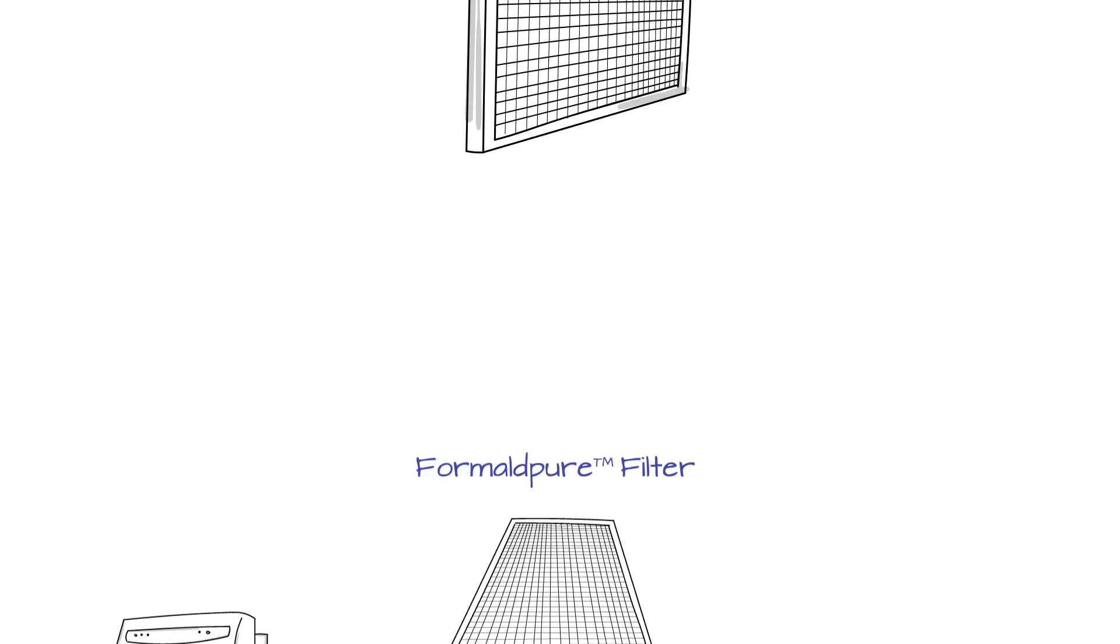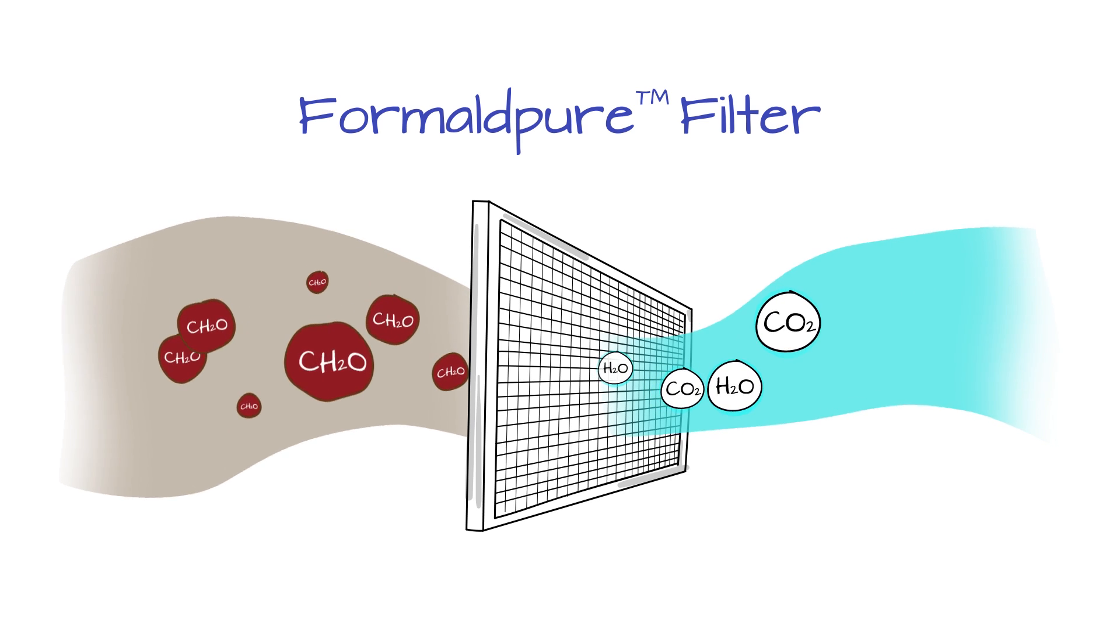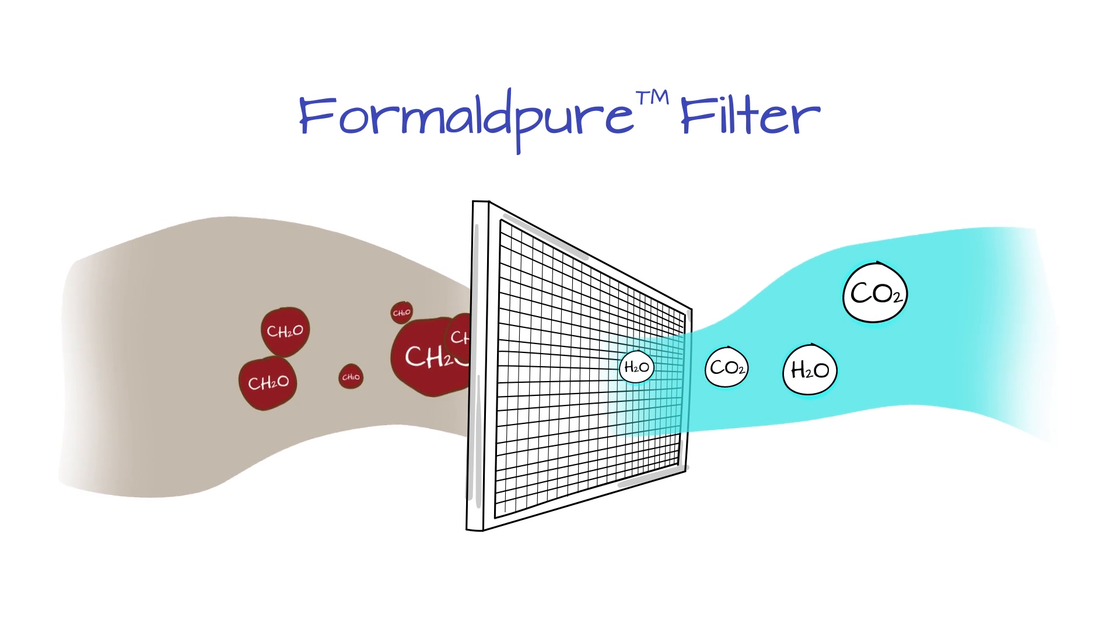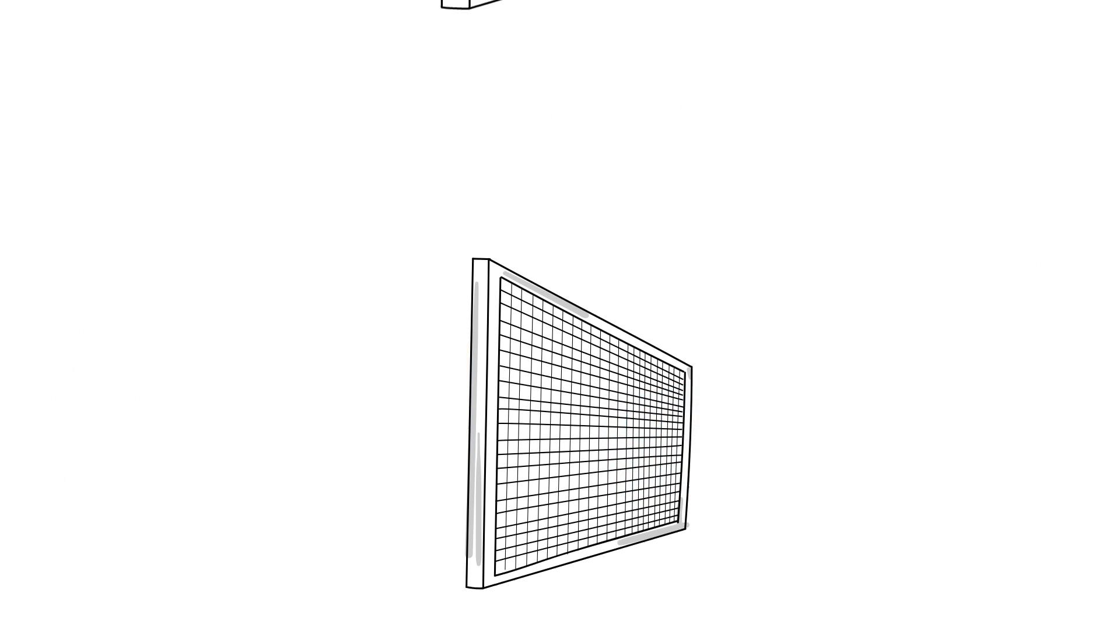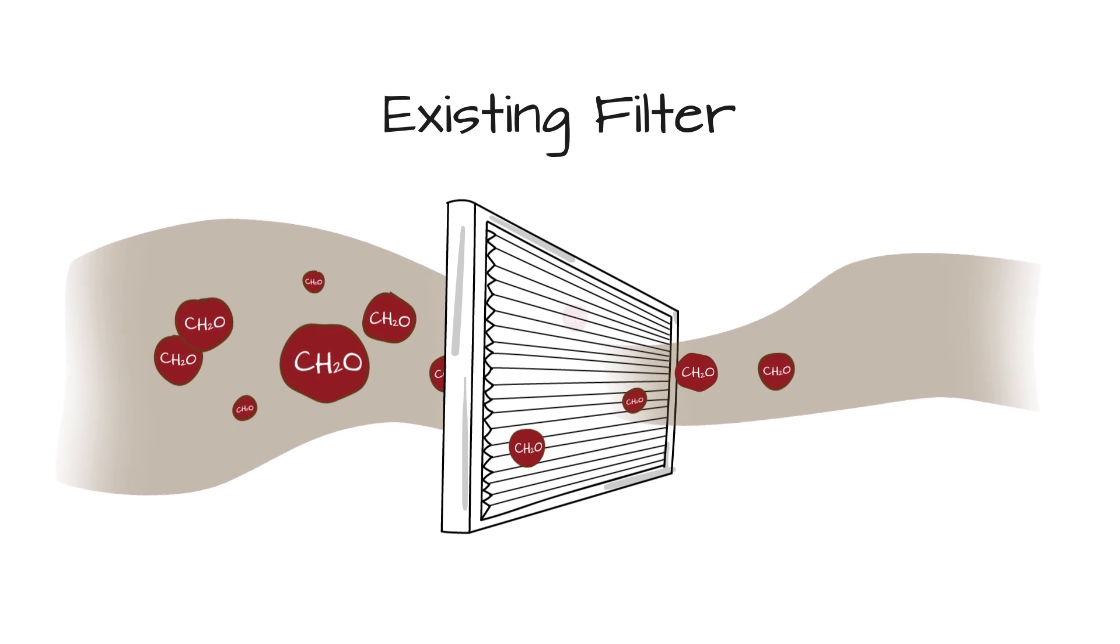As formaldehyde in the air flows through the Formaldpure catalyst, it is converted to water vapor and carbon dioxide, which are components of the natural air we breathe. This is a significant improvement versus existing products where the formaldehyde can escape and re-enter the air.